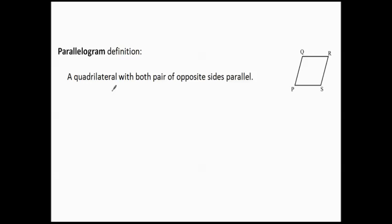Let's begin with the definition of a parallelogram. It is a quadrilateral — four sides — with both pairs of opposite sides parallel. Make yourself a picture of what that looks like: this side and this side parallel, shown with arrows, and the other pair of sides parallel, also shown with arrows. If both pairs of opposite sides are parallel, that is the definition — it is a parallelogram.